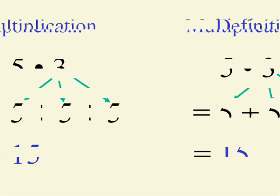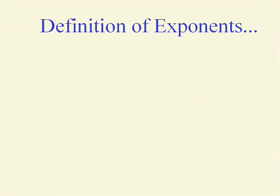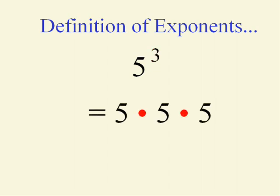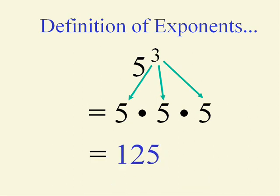That's very different from exponentiation. With exponentiation, we put the three up as an exponent and the three still has a say — it's just not multiple addition, it's multiple multiplication. And five times five times five is certainly not fifteen. It's a much higher number: a hundred and twenty-five.